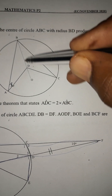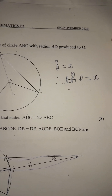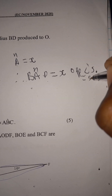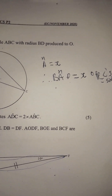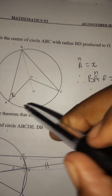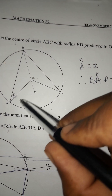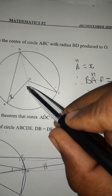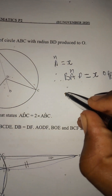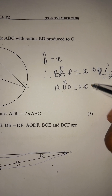We said angle BAD equals x. The reason is opposite angles equal sides. We are not done. We can also see that angle ADO is twice the angle at the circumference — angle at the center.